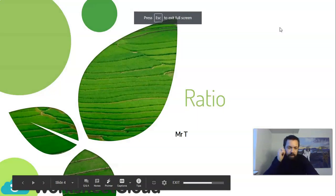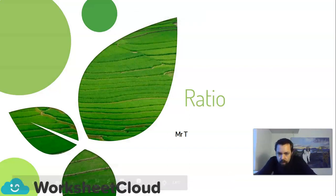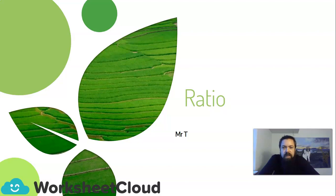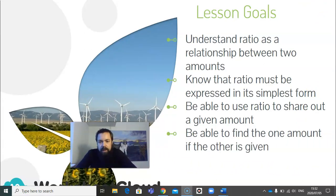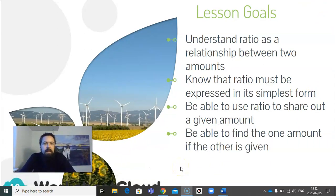So on to the topic for today, which is ratio — a new topic for some of you. Grade 5 is the first year where ratio is taught; it's probably something you've seen in real life but haven't really considered much. Our goals for today: understand that ratio is the relationship between two amounts; know that ratio must be expressed in its simplest form; be able to use ratio to share out a given amount; and be able to find one amount if the other is given.